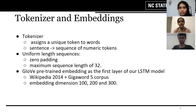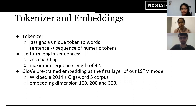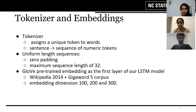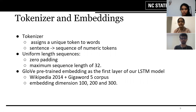In order to ensure that all the sequences are of uniform length, we use zero padding and limit each sequence to a maximum sequence length of 32, because most of the headlines in the entire dataset are much fewer than 32 words, and this is a hyperparameter. We use the GloVe pre-trained embedding as the first layer of our LSTM model. GloVe is a pre-trained model based on how frequently words co-occur in the Wikipedia 2014 and Gigaword 5 corpora, and the resulting representations model interesting linear substructures of the word vector space.